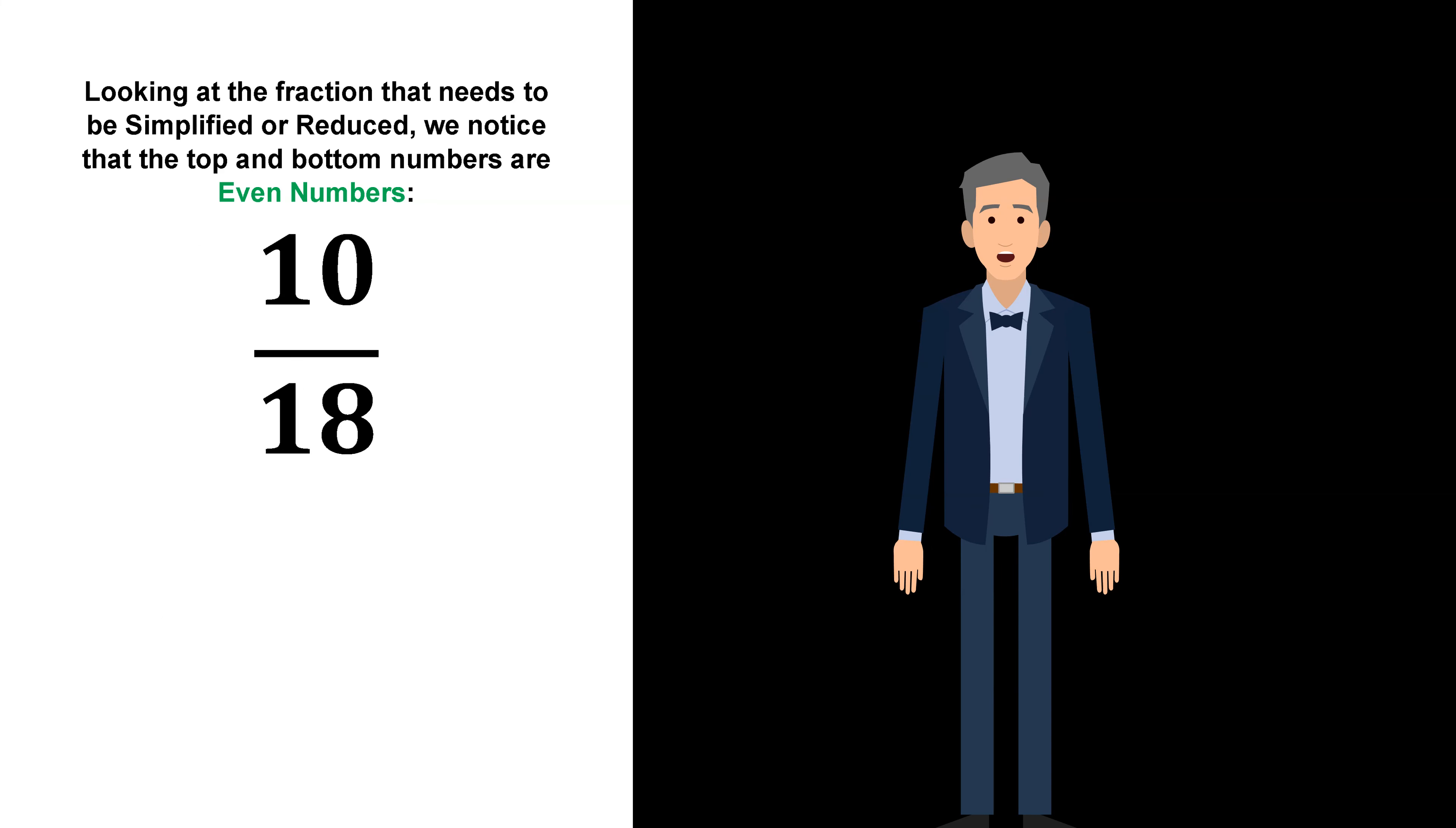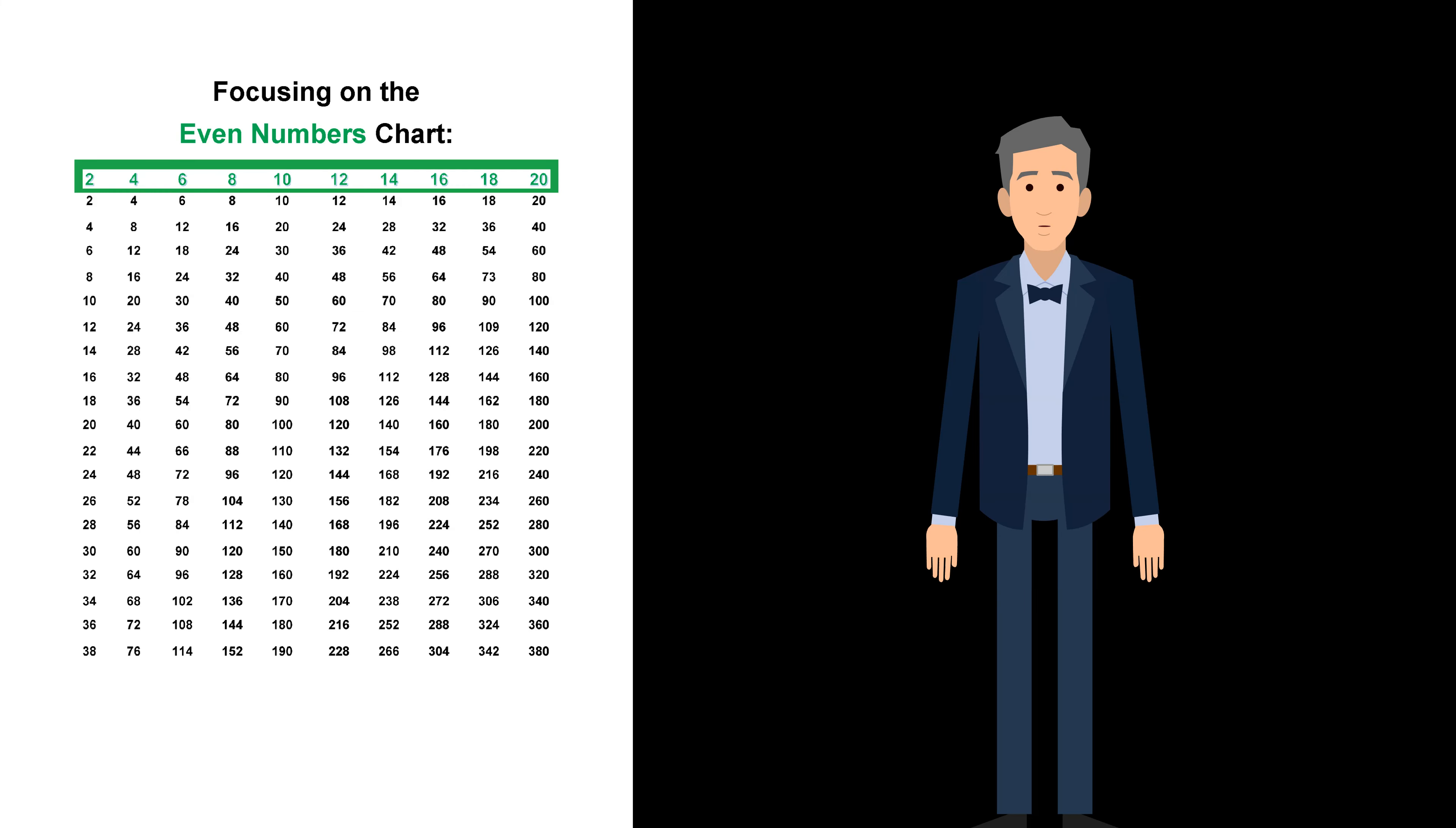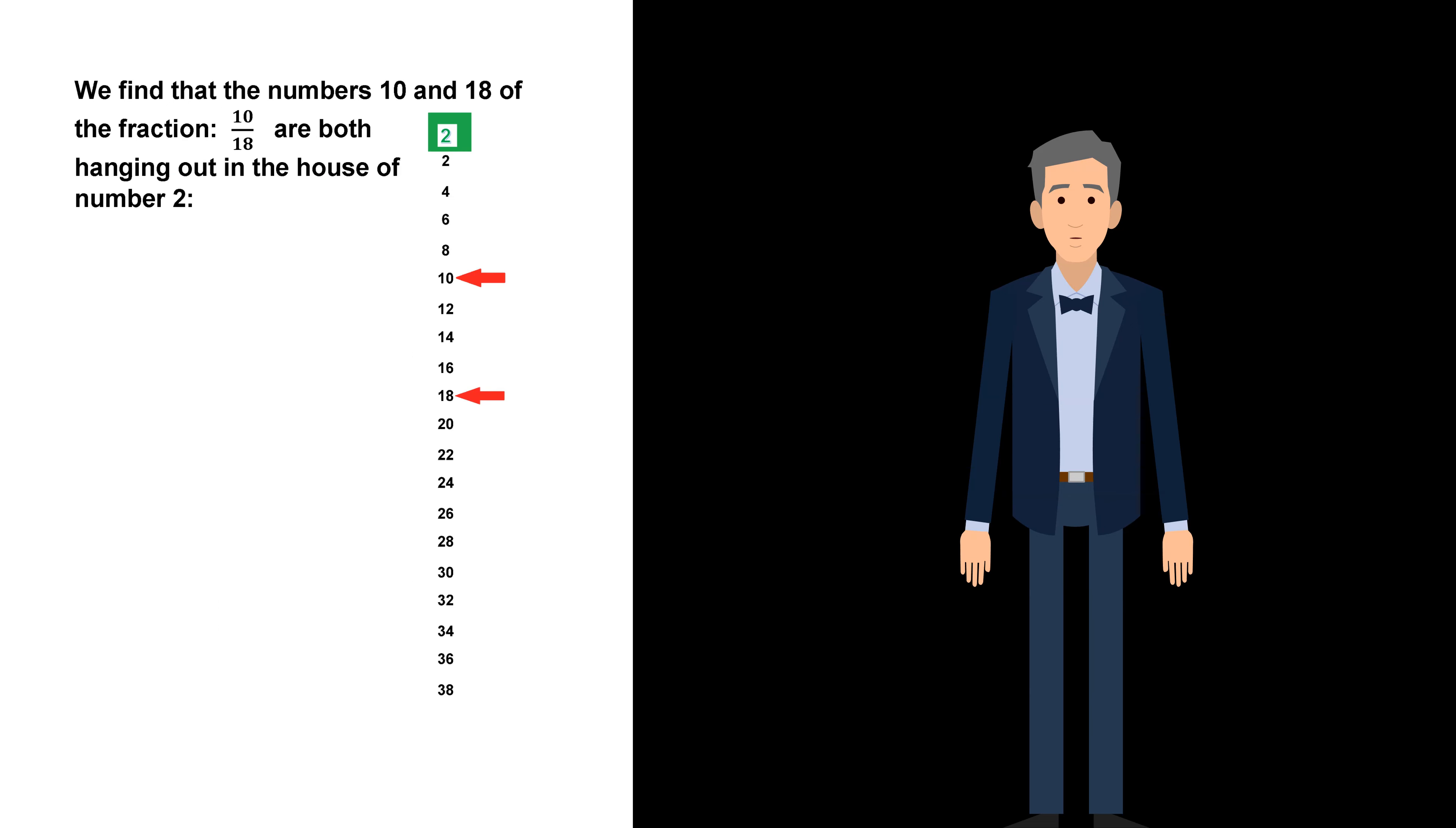Looking at the fraction that needs to be simplified or reduced, we notice that the top and bottom numbers are even numbers. Focusing on the even numbers chart, we find that the numbers 10 and 18 of the fraction, 10 18ths, are both hanging out in the house of number 2.